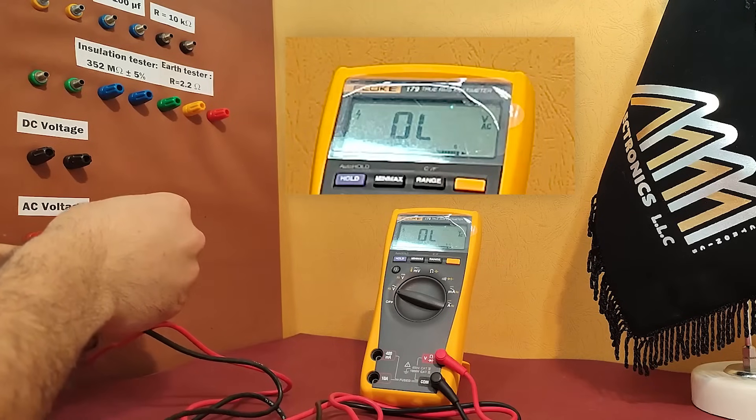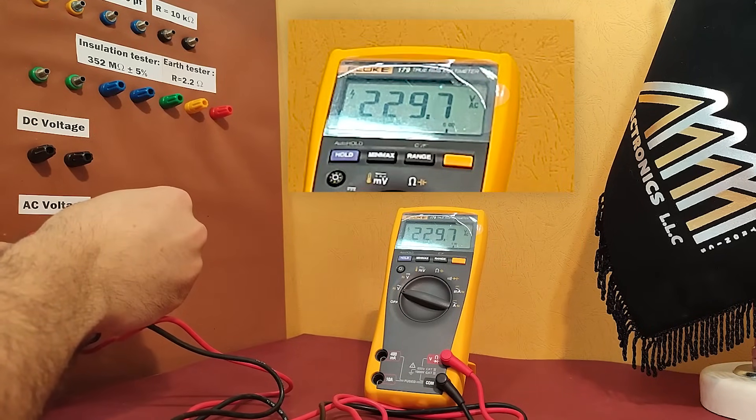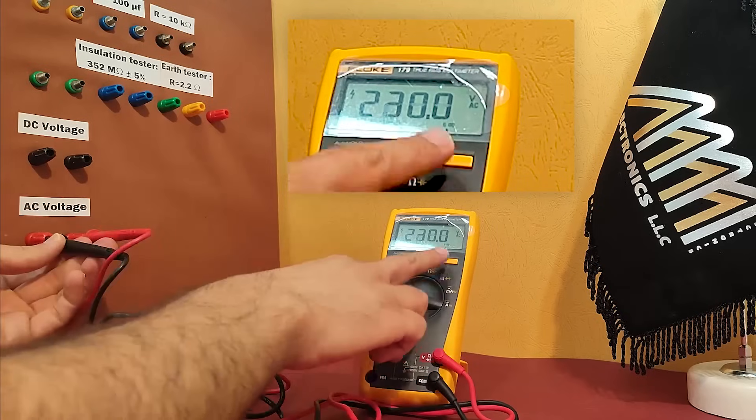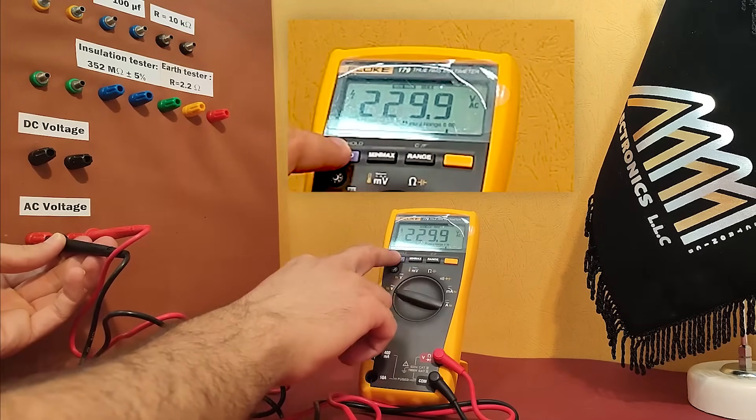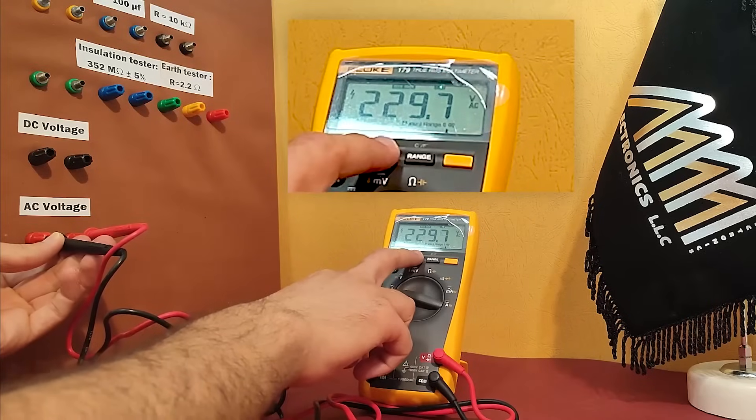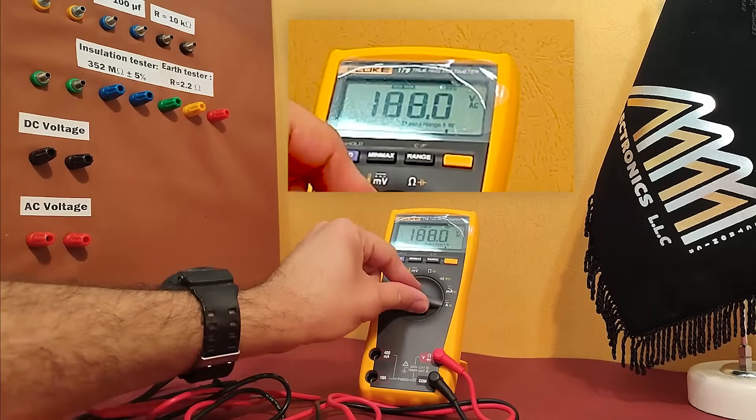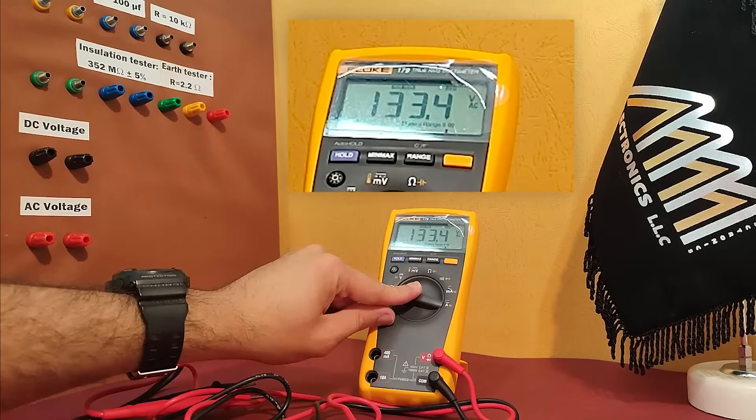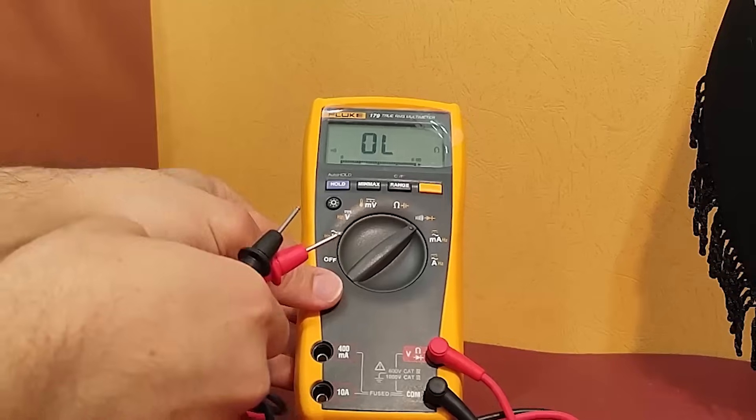The FLOG 179 multimeter is a versatile and high quality device that can measure voltage, current resistance and temperature. It is perfect for both professional and hobby use. And its sturdy design excellent quality leads and backlight display make it an essential tool for anyone who wants to work with electrical cabinet.